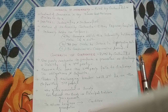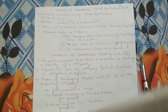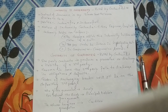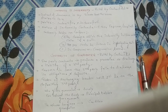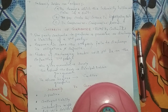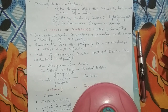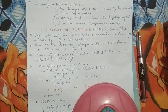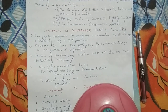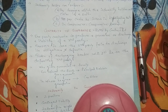One party contracts to perform a promise or discharge a liability of a third party. For example, a contractor gets a tender from the government and comes to the bank wanting a guarantee. If everything is in order, the bank gives the guarantee to the government on behalf of the contractor — so the bank is the third party here. Now, who is the third party for the bank? The contractor is the third party for the bank, and for the government, the bank is the third party — it depends on whose reference we are seeing.